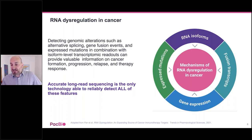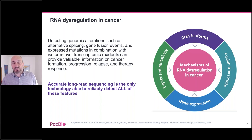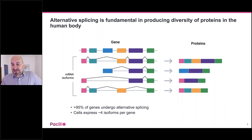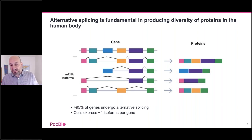Right now, most cancer transcriptome studies are only looking at gene expression, which can be done via qPCR, expression arrays, and short-read RNA sequencing. However, when you take these approaches, this misses most of the information that resides within the transcriptome. As you'll hear from Arthur Dondi, only accurate long-read sequencing can detect all of these RNA variants in tumor samples. One key aspect of RNA dysregulation is alternative splicing. In normal cells, each gene produces several isoforms — different combinations of the exons of the gene — as you can see on the left.